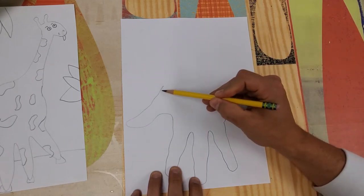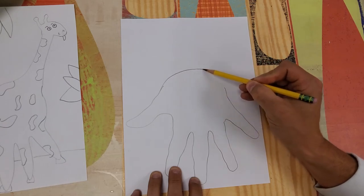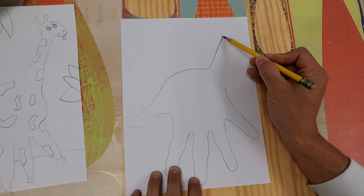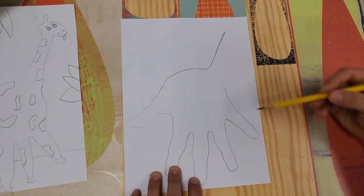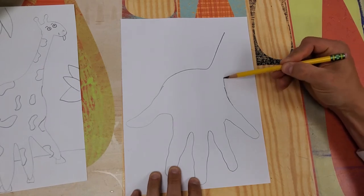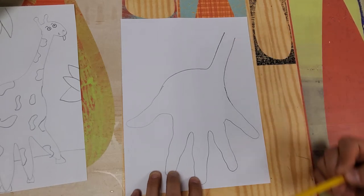Over here on my thumb side, I'm going to curve up for the giraffe's neck, and then turn to go straight towards the top of the paper at an angle. Do you see that? Then I'm bringing this other line up close but not too close. Here is my giraffe's neck.